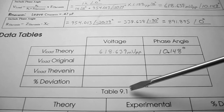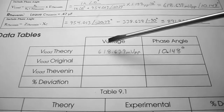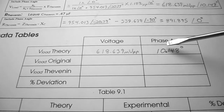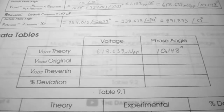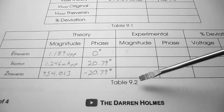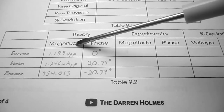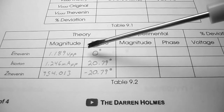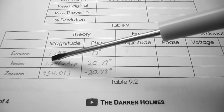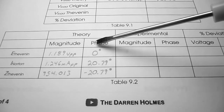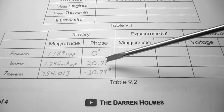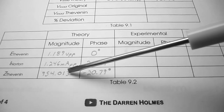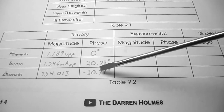Recording in table 9.1: V load theory = 618.639 mV peak-to-peak, phase angle = 10.148 degrees. In table 9.2: E Thevenin theory = 1.189 V peak-to-peak at 0°; I Norton theory = 1.246 mA peak-to-peak at 20.79°; Z Thevenin theory = 954.013 ohms at −20.79°.